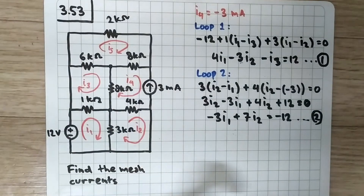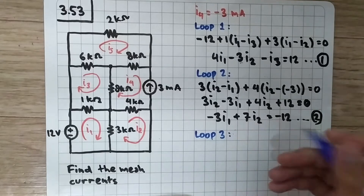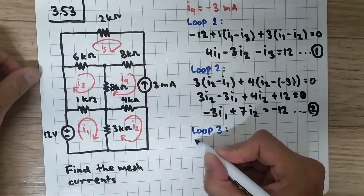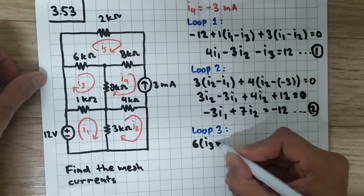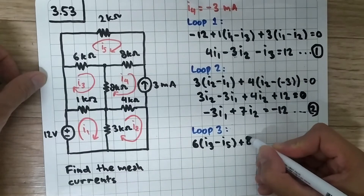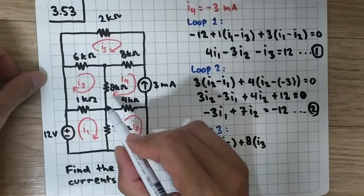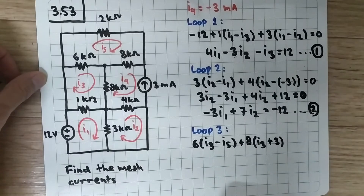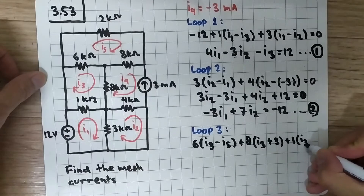Moving to loop 3. Starting from the 6 kilo ohm resistor, the focus is i3 but i5 flows in the opposite direction, so minus i5. For the 8 kilo ohm resistor, we multiply by i3, and i4 flows in the opposite direction. Since i4 is minus 3, minus minus 3 gives plus 3. The last component is the 1 kilo ohm resistor, giving 1 times (i3 minus i1). This equals zero.